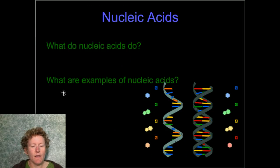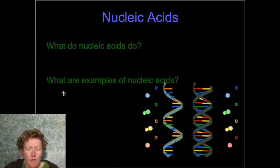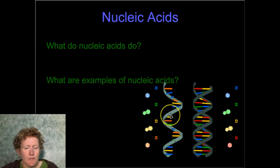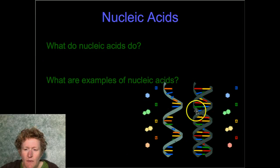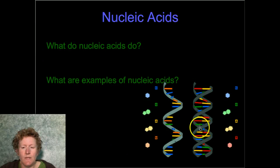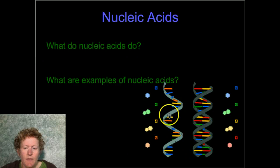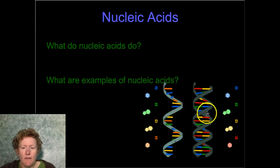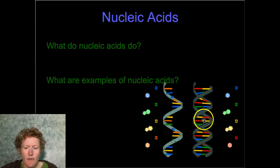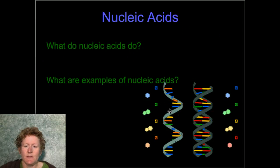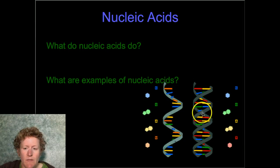Nucleic acids are another group of biological molecules. We talked about RNA, which is single-stranded, and DNA, which is double-stranded. RNA works outside the nucleus, DNA stays inside and holds genetic information. RNA is the worker bee — it goes out and builds proteins, while DNA holds the genetic information.